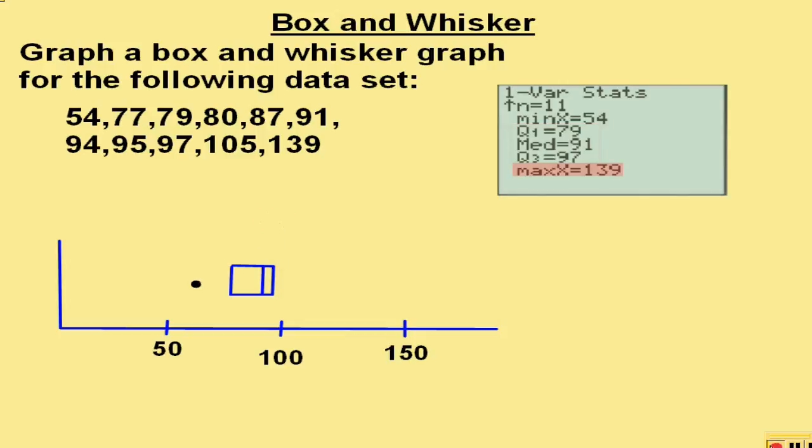The last number that's used is the maximum, and it's at 139, where we will again put a dot. We now use the dots on each side of the box to create the whiskers. And this is now the box and whisker graph of the data set.